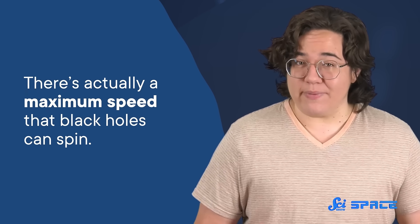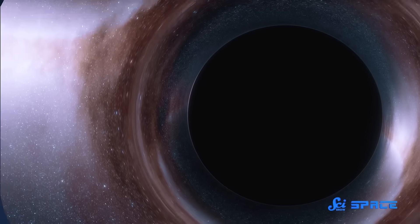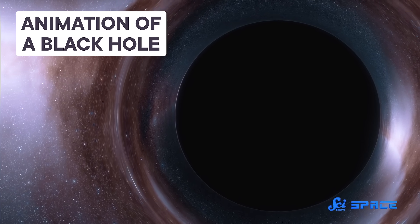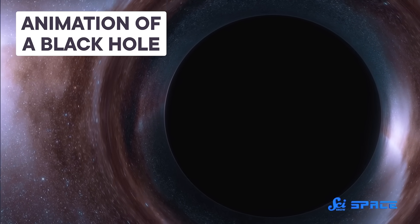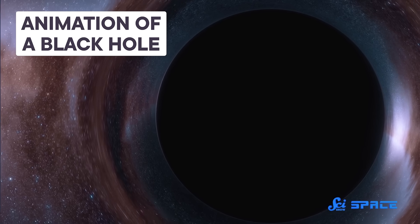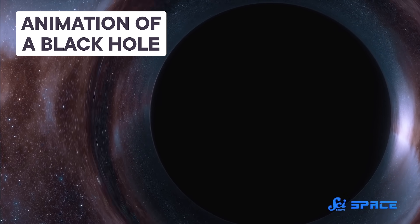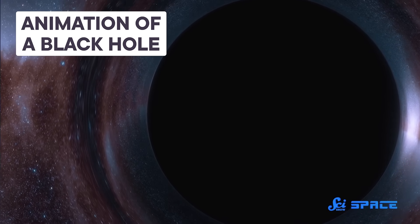But mathematical solutions to Einstein's theory of general relativity suggest that's not true. They indicate that there's actually a maximum speed that black holes can spin, and any extra angular momentum will be radiated away as gravitational waves. The problem is, the blackness of black holes has made it tough to figure out whether or not this math holds up in practice. For the longest time, no one could see how fast black holes really spin.